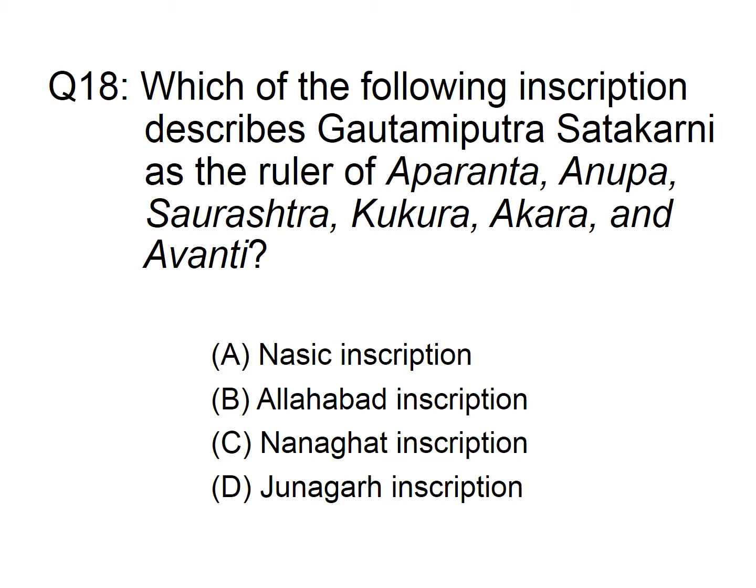Which of the following inscriptions describes Gautamiputra Satakarni as the ruler of Aparanth, Anupa, Saurashtra, Kukara, Akara, and Avanti? Option A: Nasik inscription, B: Allahabad inscription, C: Nanaghat inscription, D: Junagadh inscription. The answer is option A, Nasik inscription.